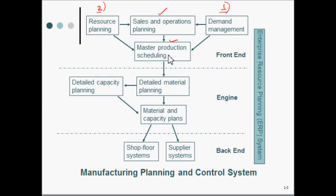Once the plan has been made, that is the basis for detailed material planning. The detailed material planning is where all the parts, components, and sub-components that go into the finished product have to be planned. This is where, based on the product structure — also called bill of material — we try to understand what different parts might be necessary to make the finished product and plan them accordingly. That's where we come to the engine section, also referred to as MRP.